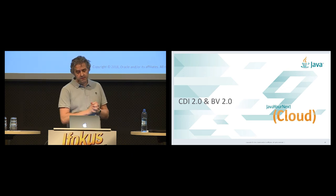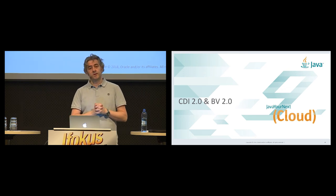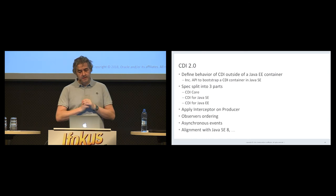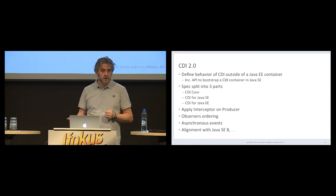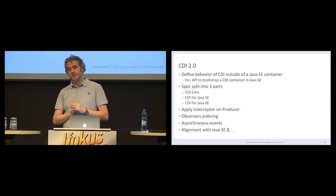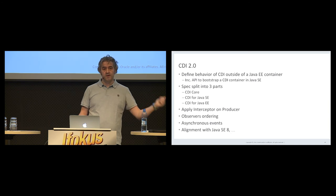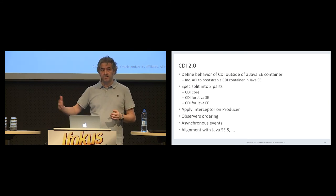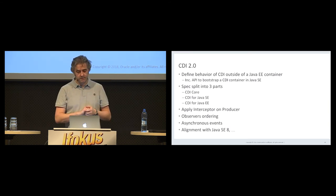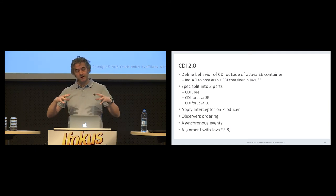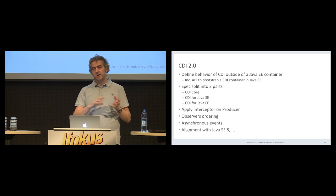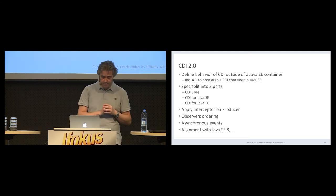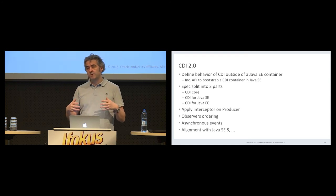In Java EE8, CDI 2 and Bean Validation have been updated too — those two specifications are led by our friends at Red Hat. CDI is a key technology of the platform; a lot of other APIs are using CDI — Bean Validation, JSF, JAX-RS, the Security API, and so on. The issue with CDI is that it's a quite large specification, which is a problem if you want to use CDI in a very lightweight Java SE application. So the CDI 2 specification has been made more modular: split into three — CDI Core, CDI for Java SE built on that, and CDI for Java EE built on top of that.